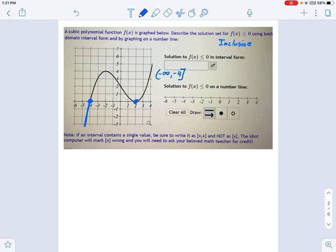And then we look for another place where it's negative. I don't see any, but I do see another x-intercept where the function is equal to zero. And that's, remember, that's allowed. Equal to zero is okay. So I would say union and then a square bracket 2 comma 2.